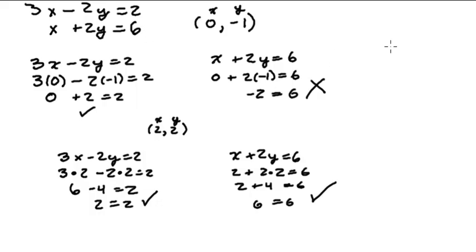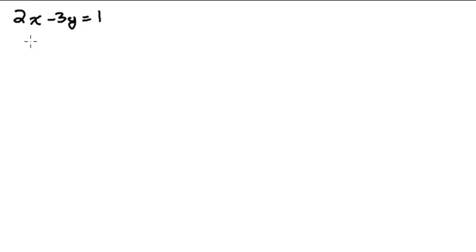Another way to find the solution to a system of linear equations is to graph them and find the point of intersection. For example, consider the two linear equations 2x minus 3y equals 1, and x plus y equals 3. I want to find the solution to this system graphically by graphing both lines on the same set of coordinate axes.